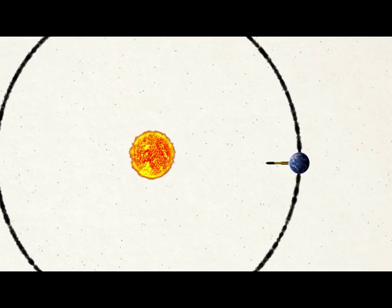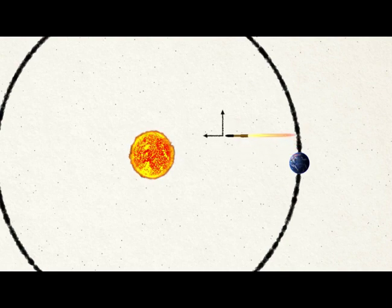If you launch a rocket from Earth straight toward the Sun, it won't lose that sideways speed, and so it will miss the Sun.